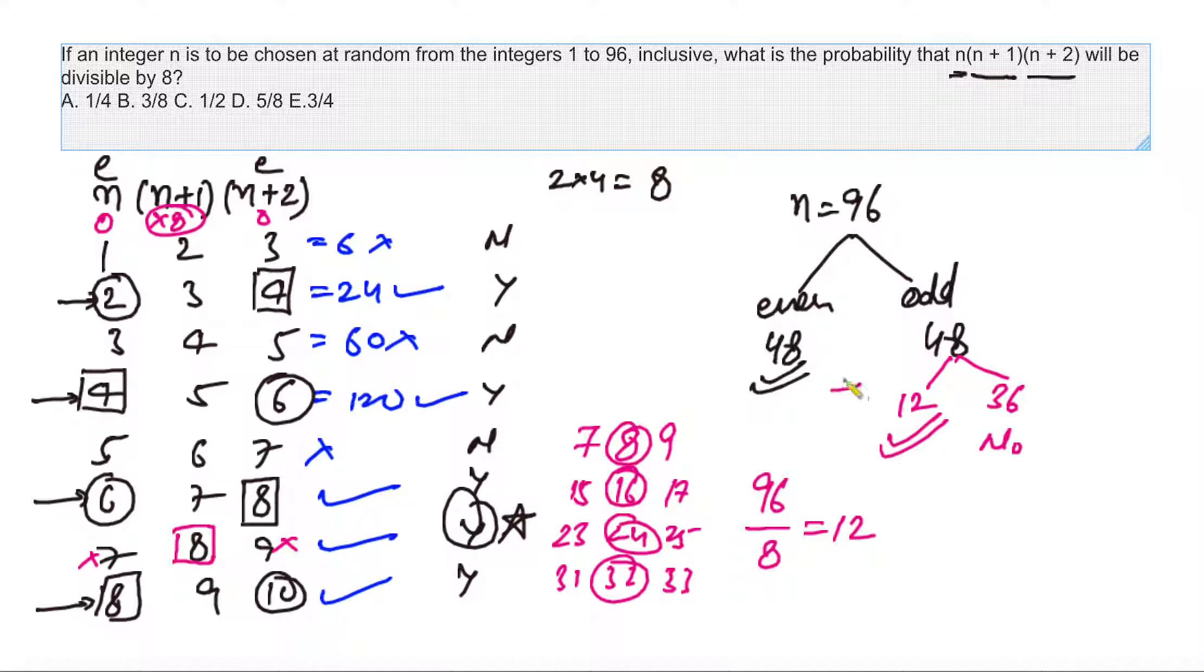So our favorable cases now count to 48 plus 12, that is 60. And the total possibilities that we have is 96. So our probability becomes 5 over 8, and that's our answer.